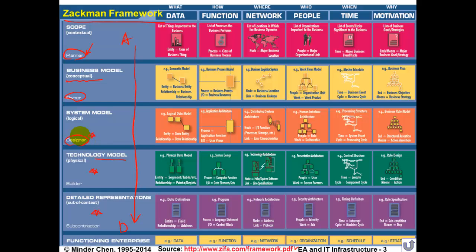On the column side, we have six columns. The original model actually had only three columns: data, function, and network or geographic. If you're thinking about information systems, it's really about data and processing. Then you have distributed systems, so you need a network to connect them together — that's the geographic location and network column.